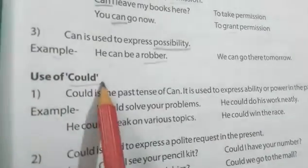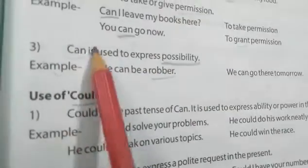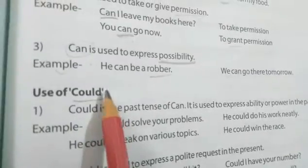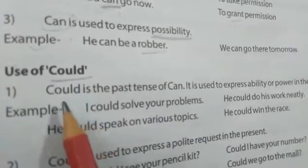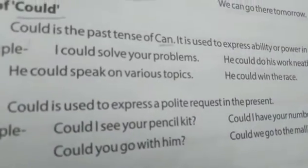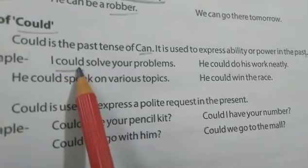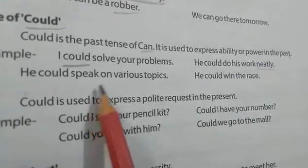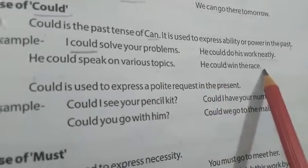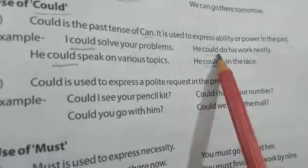Use of 'could': Could is the past tense of can. It is used to show ability, capability, or power in the past. Examples: 'I could solve your problems', 'He could do his work neatly' — we are talking about the past. 'He could speak on various topics', 'He could win the race' — so could shows past ability.